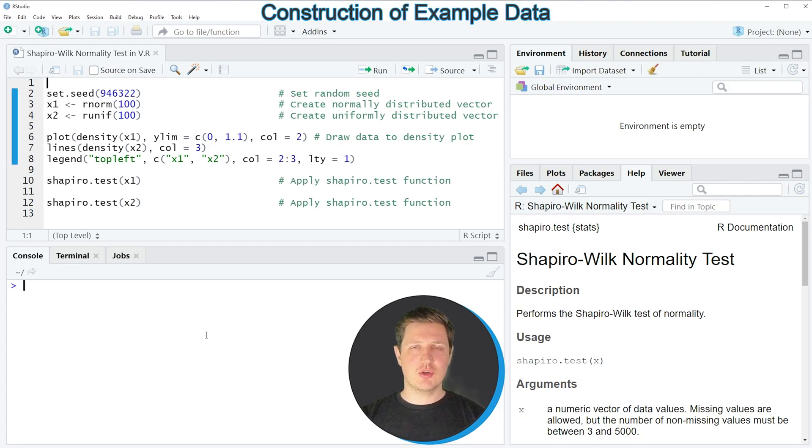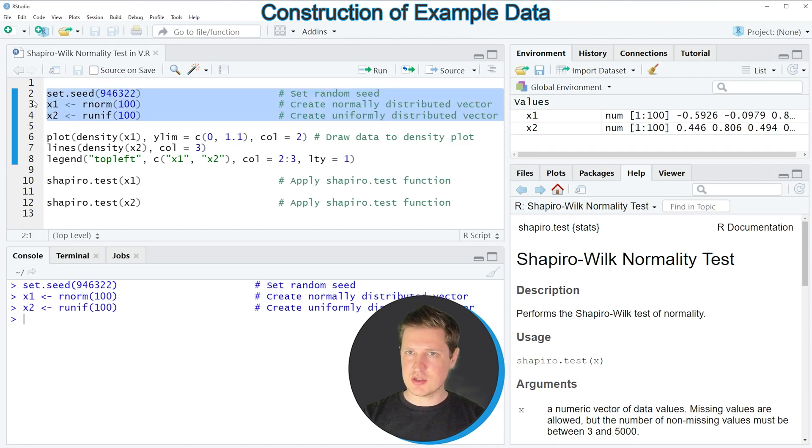In the video I'm going to show you an example based on the data that we can create with lines 2 to 4 of the code. If you run these lines of code, you can see that at the top right of RStudio two new vector objects appear which are called X1 and X2, and both of these vector objects contain numeric values.